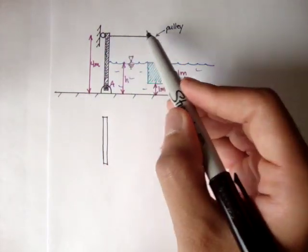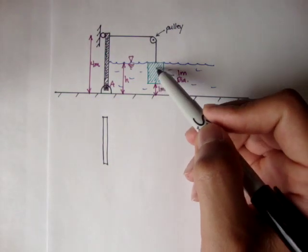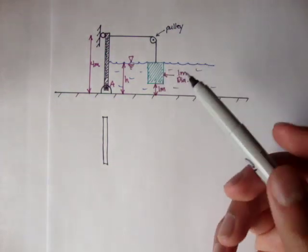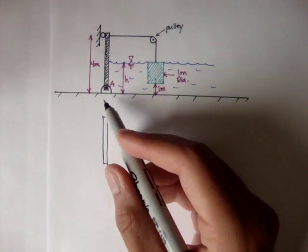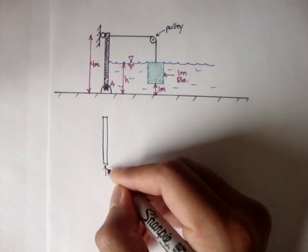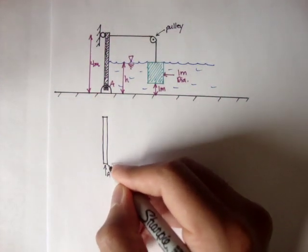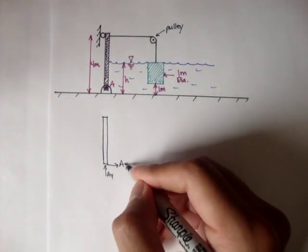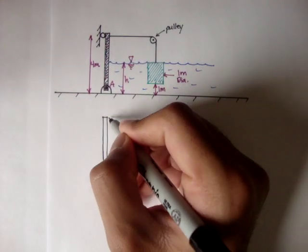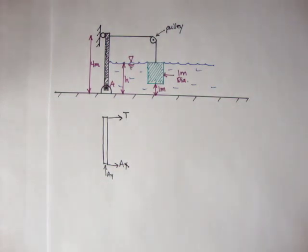The tension in this rope is dependent on the buoyant force acting on the cylindrical mass. We also have a hinge at A, and it's a pin. So we have forces, reaction forces Ay and Ax. Then we have the tension T, which I'll call T.